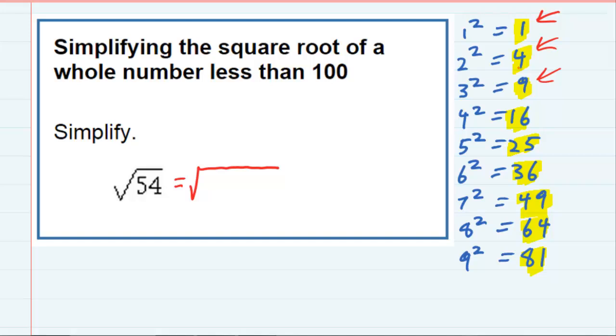So I keep going down my list, and the next one is 9. And I can rewrite 54 as 9 times something. 54 would actually be 9 times 6.